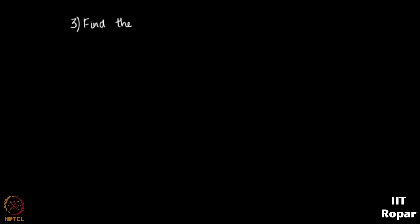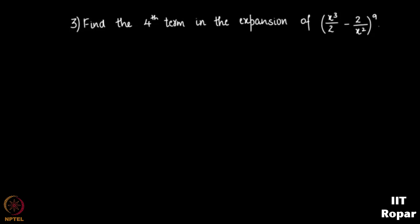The next question: find the fourth term in the expansion of (x³/2 − 2/x²)^9. The term looks complicated but the problem is simple — we need to find one specific term, not all terms. Recall that the rth term is given by T_r = nC(r−1)·a^(n−r+1)·b^(r−1).